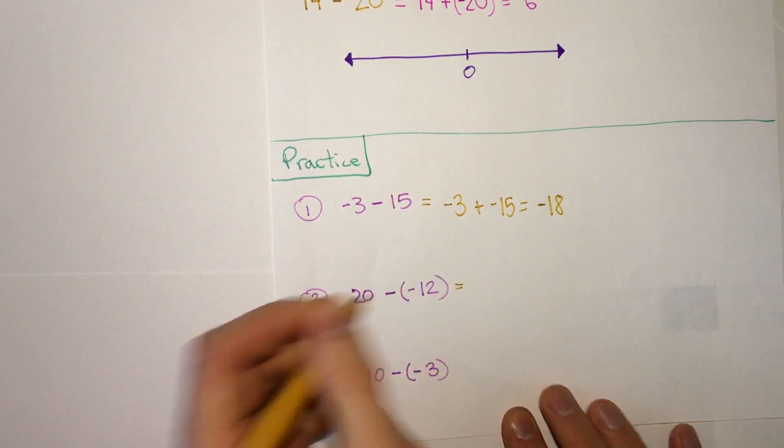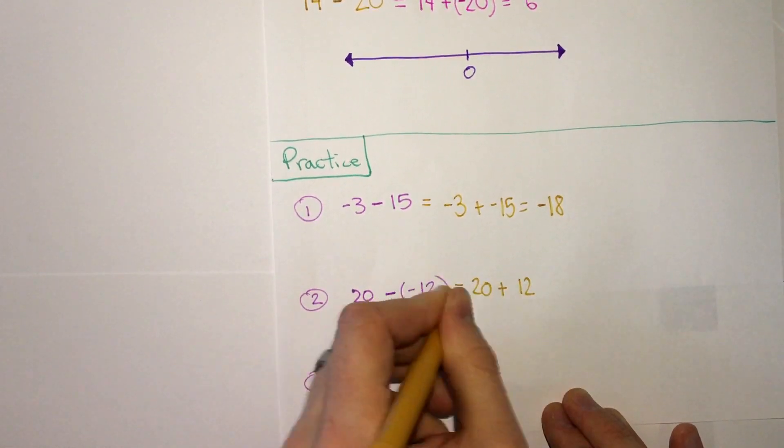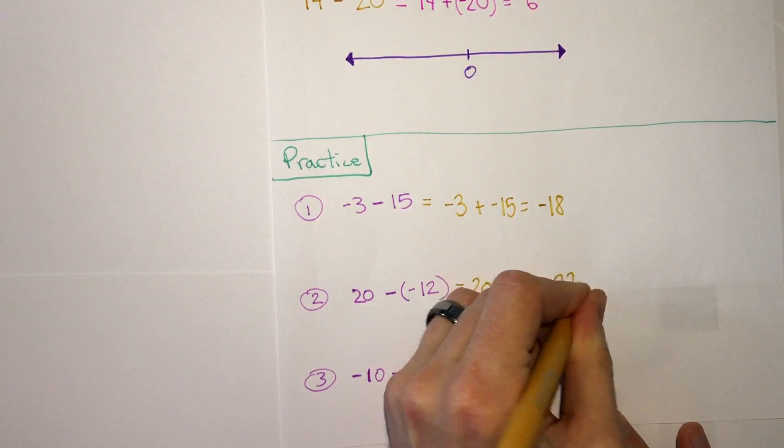Here, keep, change, change. We get keep, change, negative 12 becomes positive 12. Just get 32.